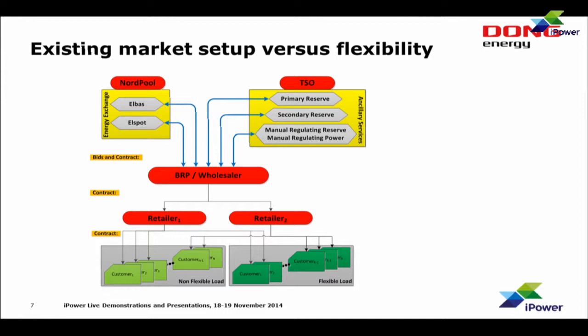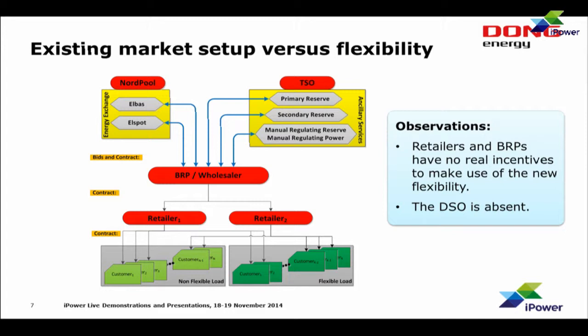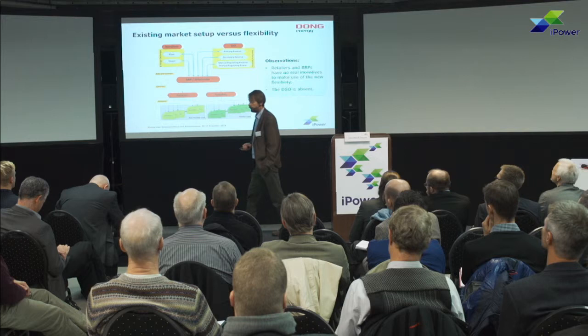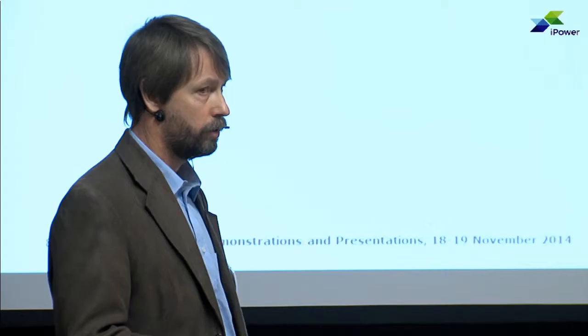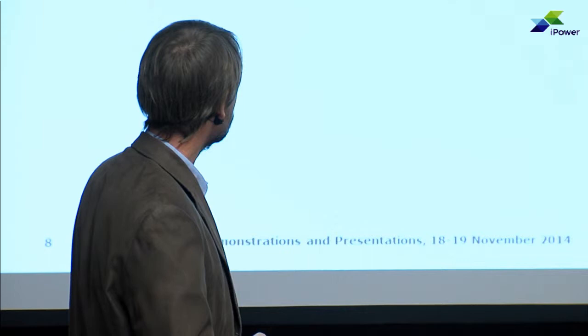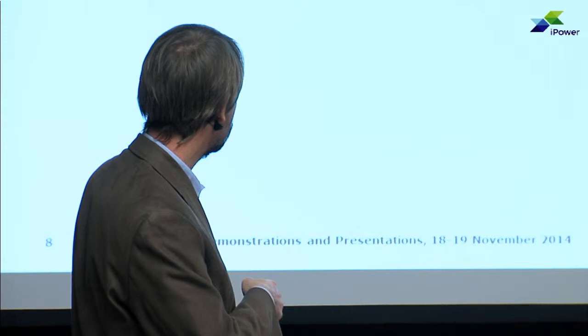So we can make two observations from this drawing: the retailers and the BRPs have no incentives to take benefit of the flexibility. And you can also see from this drawing that the DSO is absent for various reasons. Let's dwell a bit on drivers and challenges for the DSOs. The DSOs have this obligation — the highest possible supply security — and they have to do it at the lowest price.